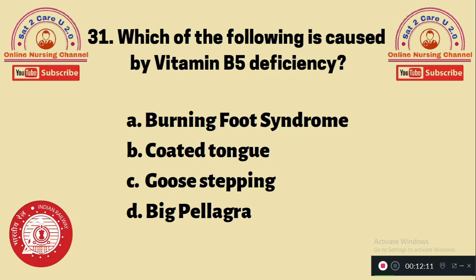Question 31: Which of the following is caused by Vitamin B5 deficiency? Pantothenic acid deficiency causes which symptom? A. Burning foot syndrome, B. Coated tongue, C. Goose flesh, D. Pellagra. Burning foot syndrome is caused by Vitamin B5 (pantothenic acid) deficiency. The answer is A.